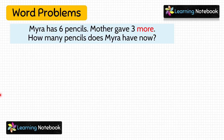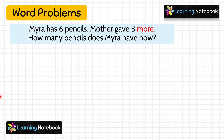The first word problem is: Myra has 6 pencils, and her mother gave her 3 more. How many pencils does Myra have now? Here, it is given that Myra already has 6 pencils, then her mother gave her 3 more pencils. So we have to find the total number of pencils Myra has now. To find the total number of pencils, we have to do addition.